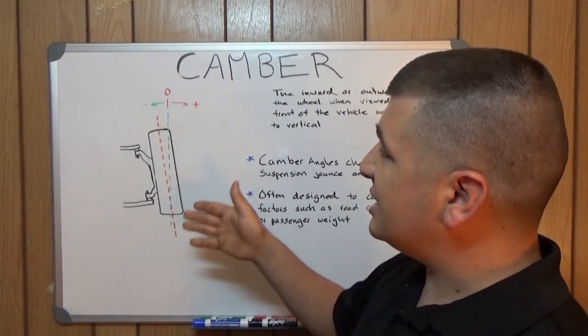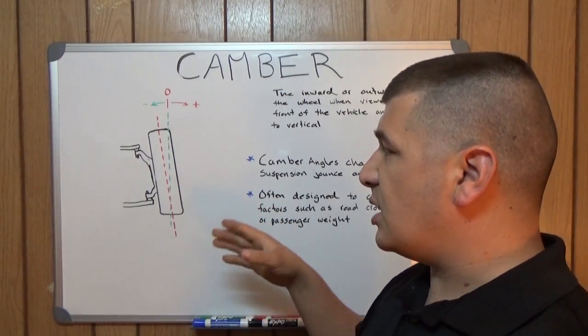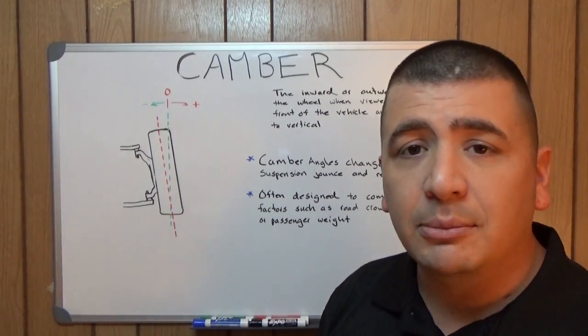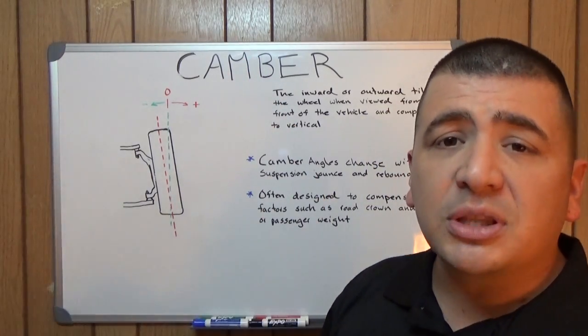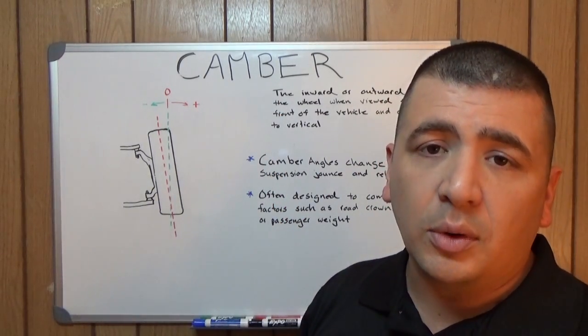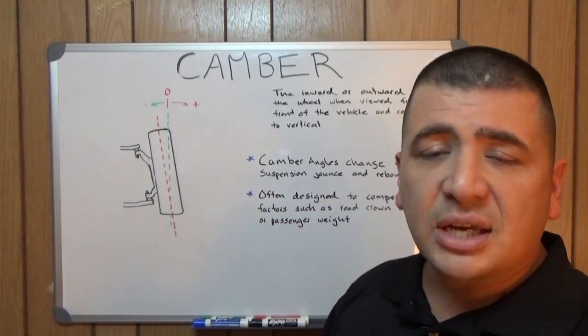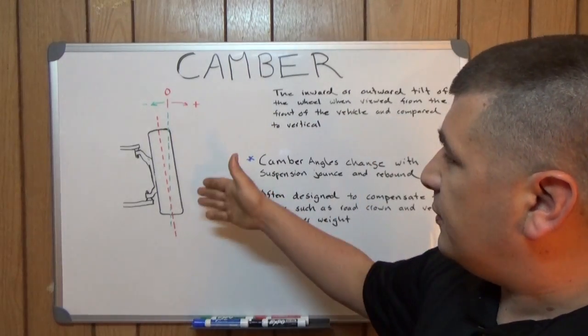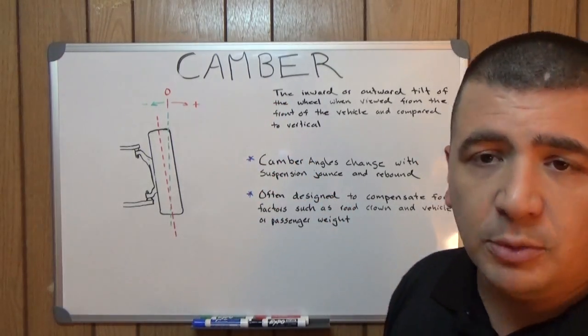Now often times the way the suspension is set up, camber readings will not be the same while you're driving down the road as they are when you're sitting still. And so they're engineered to be right where they want them when you're driving down the road and not always when you're just sitting still. So camber measurements, you're typically going to see less than one degree of camber, either positive or negative.